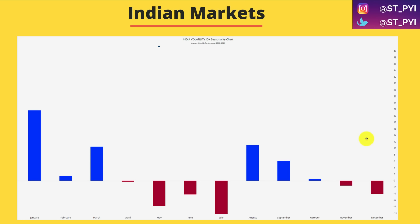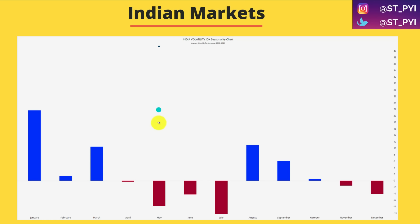The first chart is the Indian Volatility Index monthly performance from 2014 to 2024. This is where a lot of people are getting it wrong, in my view. If you look at the monthly performance of Indian VIX over the last 10 years, volatile months have been January, February, and March, followed by August and September. October to December and April to July have been very good quarters for the market where volatility has remained low. Now, why this chart is throwing people off is because currently we are in May, and volatility is up 40-50%.